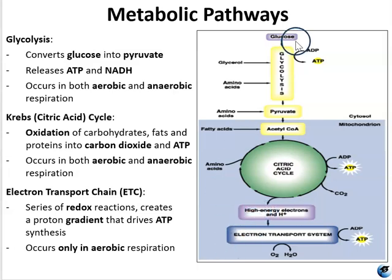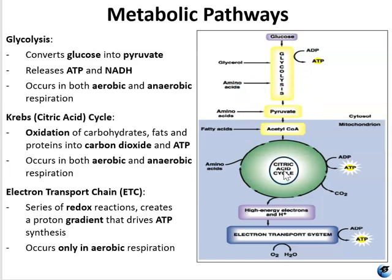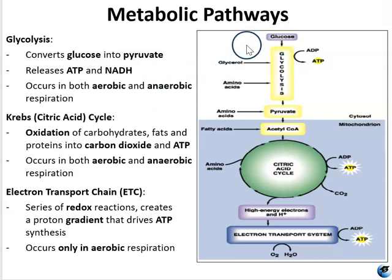So glycolysis starts with glucose and ends with pyruvate, making a relatively small amount of ATP. The Krebs cycle also makes a small amount of ATP. The electron transport system makes the most ATP, but it can only occur in the presence of oxygen. So if you have bacteria that can't tolerate oxygen, they can't use the ETC — they have to use glycolysis or fermentation. Often fermentation will occur in combination with glycolysis because the end product of fermentation is usually glucose, which can then be used to make energy via glycolysis.